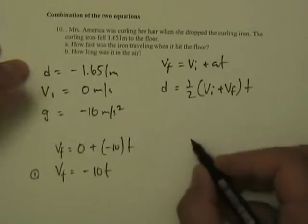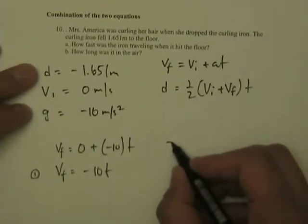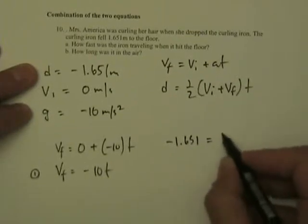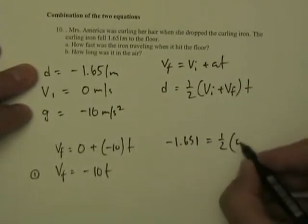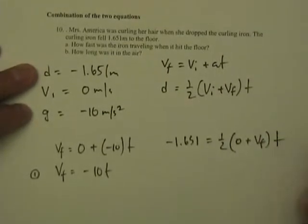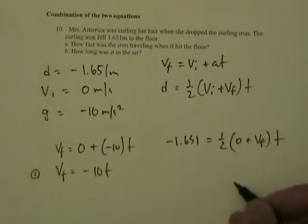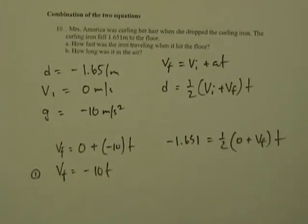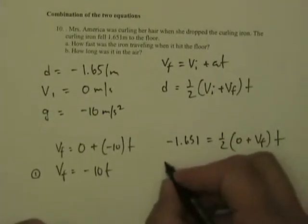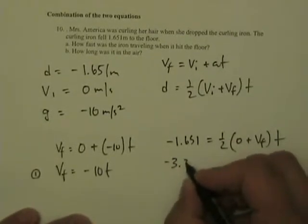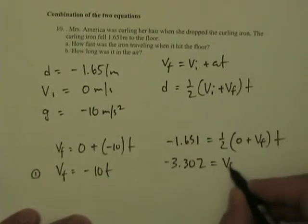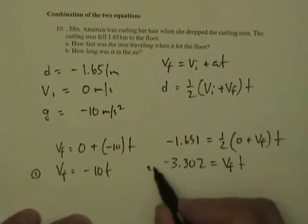My second equation is gonna be D, which is gonna be minus 1.651 equals one half. My initial velocity is zero. I have no idea what my final velocity is, times time. I'm going to cross multiply that. So what's 1.651 times 2? So that's minus 3.302 equals VF T. And that's equation 2.